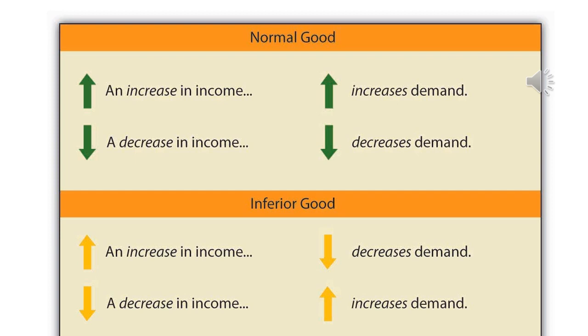Another example of an inferior good is a cheap car — if your income went up, you might stop buying a cheaper car and start buying a more expensive one.